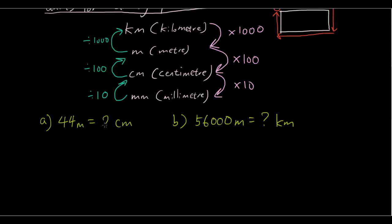Okay, the first one: 44 meters is how many centimeters? Now using the ladder, let's identify our starting point. Our starting point is meters. So let's circle meters on the ladder. And our destination is centimeters. So we want to go from meter to centimeter. We're going downwards. So we follow the downward arrow. And it's times 100. So this is the one we want. So we're going to calculate times 100 to 44. And we get 4,400 centimeters. So that is the answer.